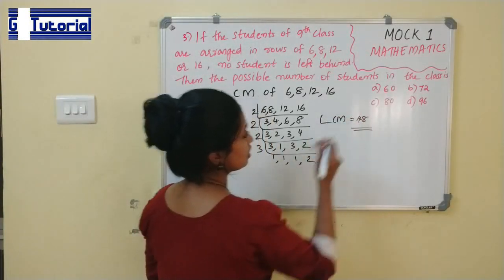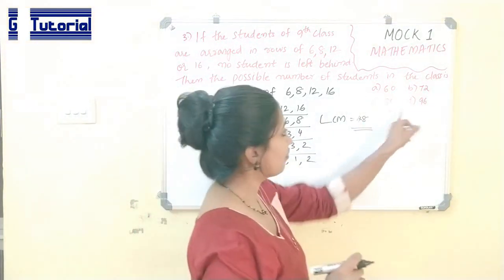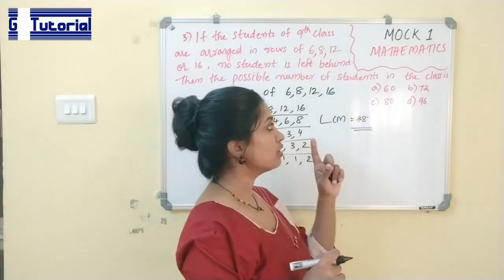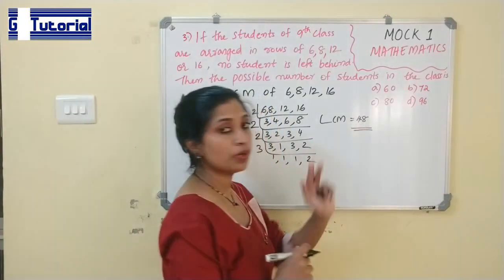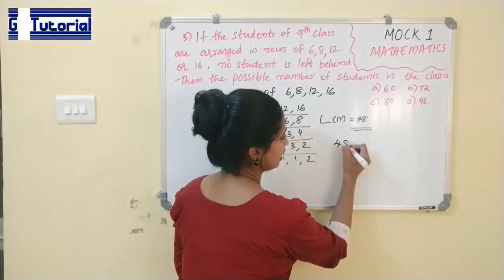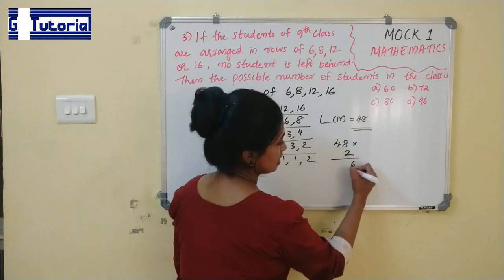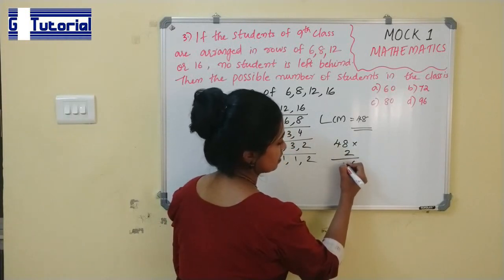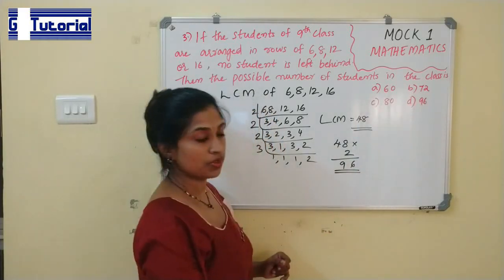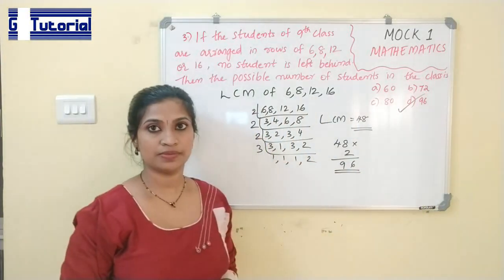So the number of students should be 48. But since 48 is not present in the given options, the number of students will be a multiple of 48. 48 × 2 = 96. So 96 is the answer to this question.